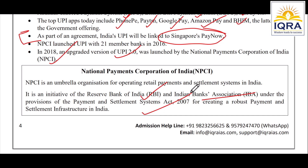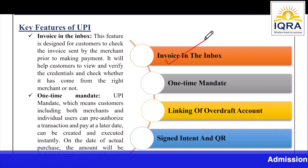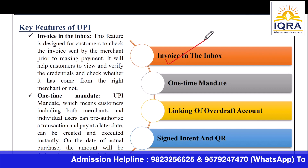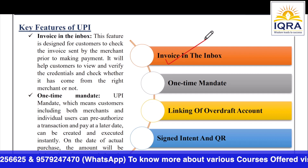Now let's understand the key features that attract customers to shift from paper currency to digital payments. There are four basic key features. First is Invoice in the Inbox — when you have a payment, a merchant sends an invoice first. For example, when you order from Zomato and choose UPI, a pop-up appears showing the amount to pay, so you can check the invoice before deciding whether to pay or not.